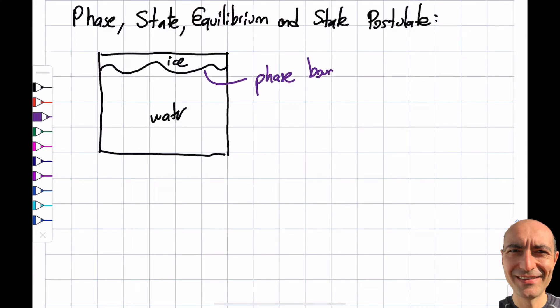This is the phase of water, this is the ice, and what we call the intersection between those two is phase boundary. And each phase, pressure and temperature and other properties are constant within the water and within the ice.